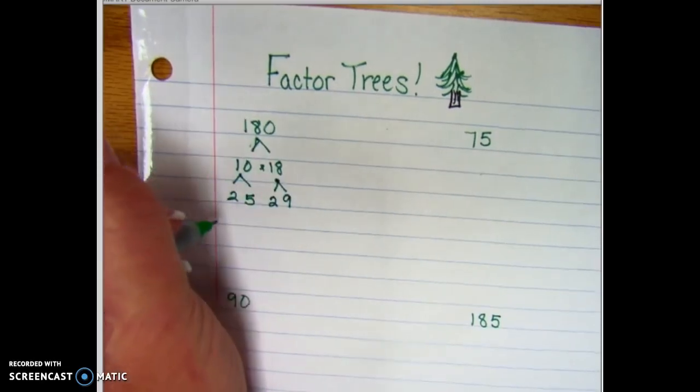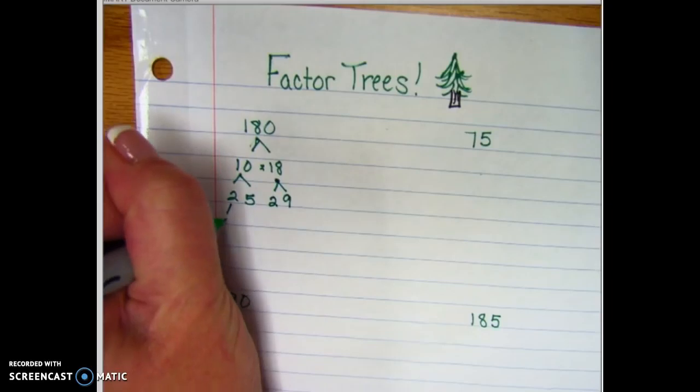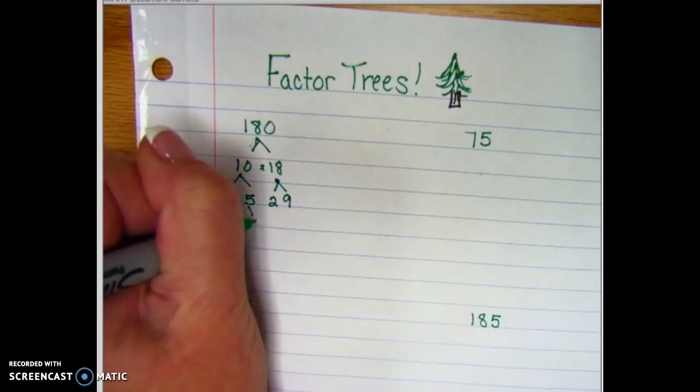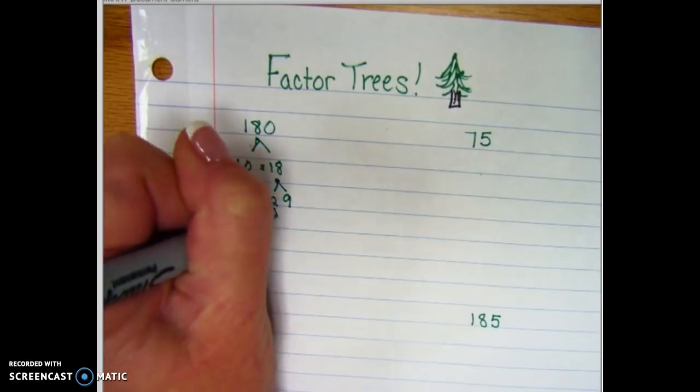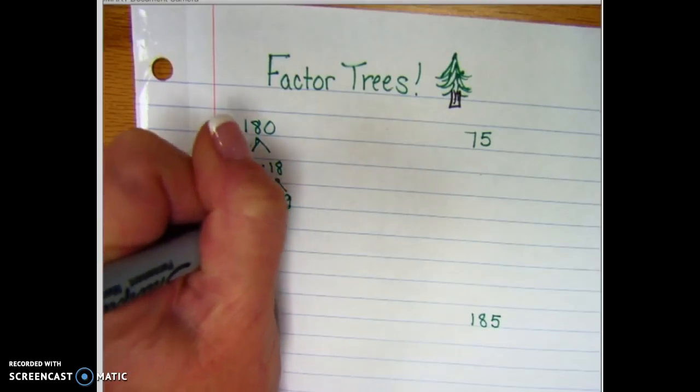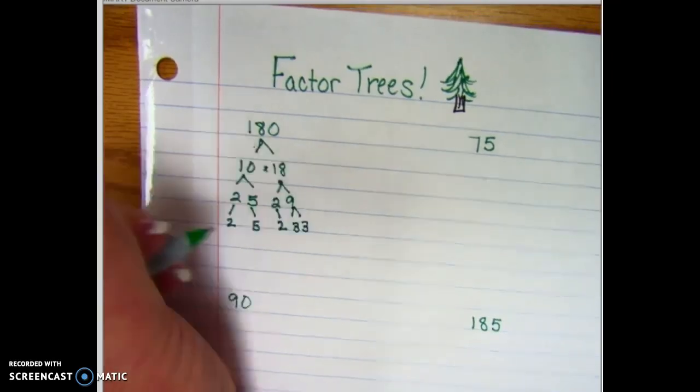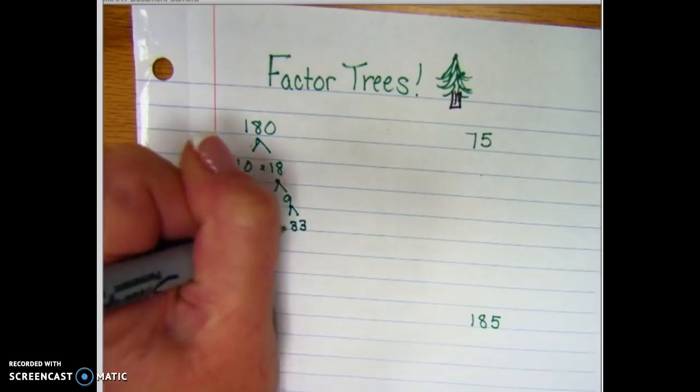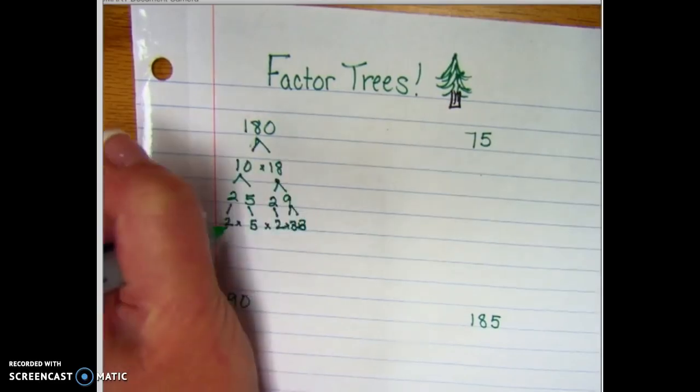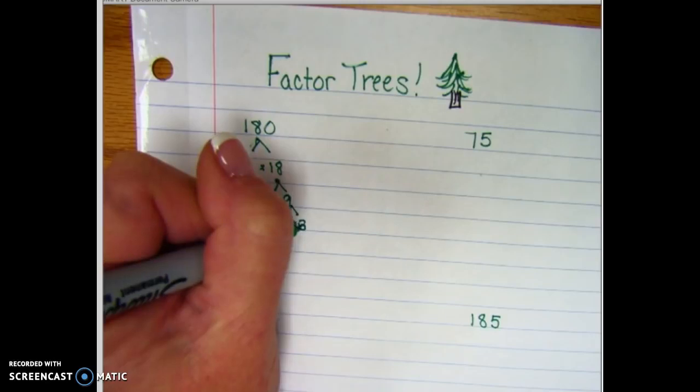So we get to the bottom level. The 2 is going to stay a 2, a 5 is going to stay a 5 - it doesn't break down anymore. A 2 is going to stay a 2, but this 9 can be a 3 and a 3. So we can also write 180 as 2 times 5 times 2 times 3 times 3.